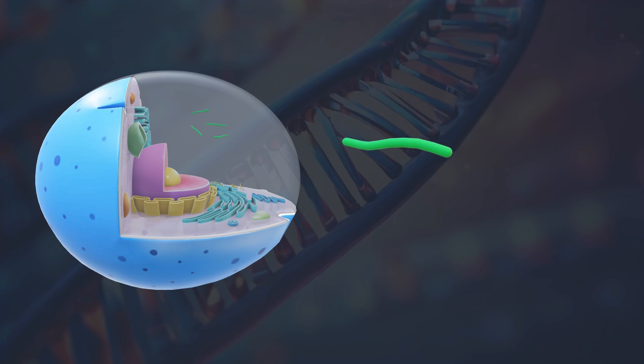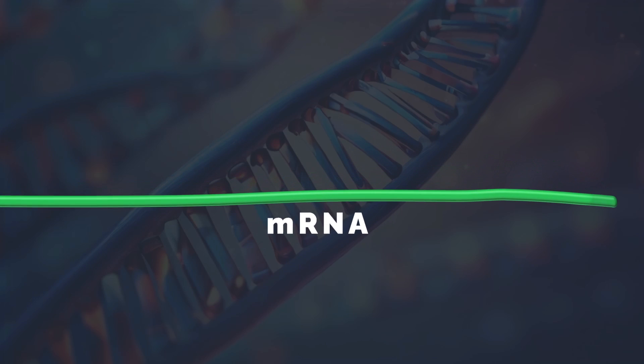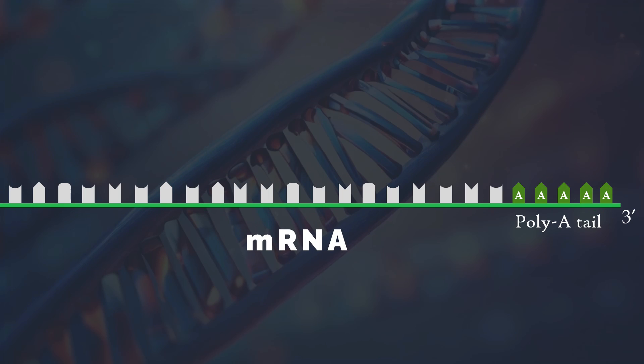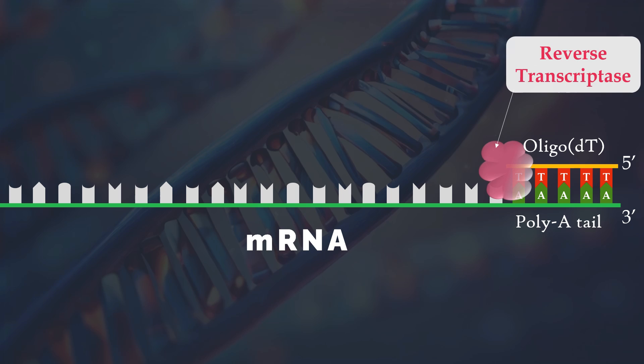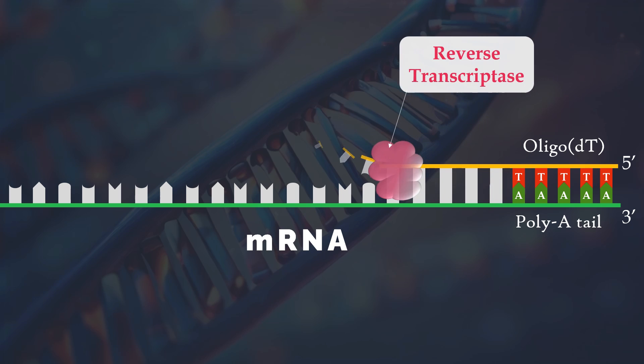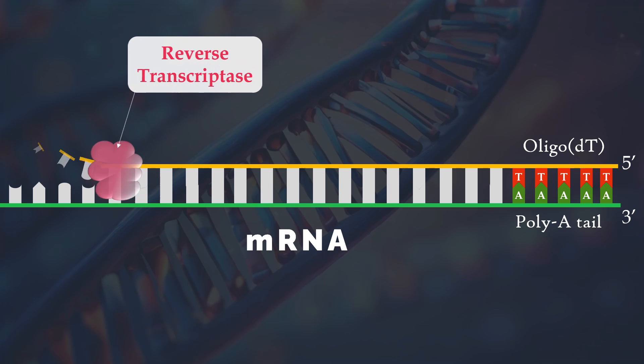The first step involves isolating the mRNA from the cell. Because most mRNAs have a poly-A tail at the 3' end, a short oligo molecule is annealed to this tail to serve as a primer for initiating DNA synthesis by the enzyme reverse transcriptase, which uses the mRNA as a template to synthesize a complementary DNA strand.